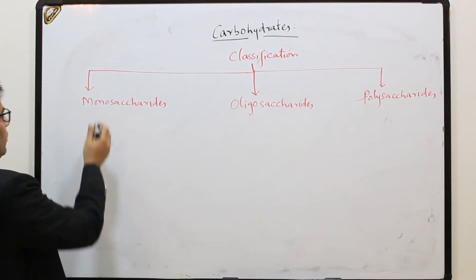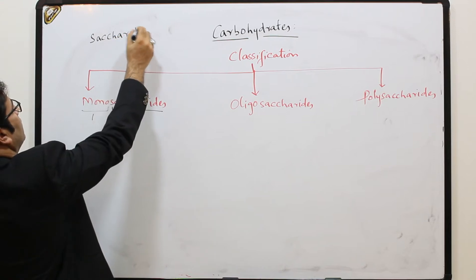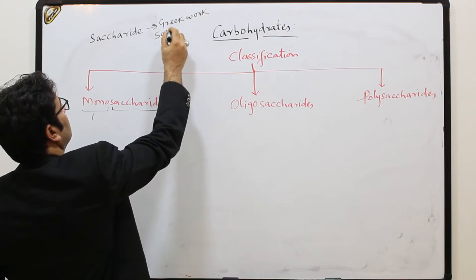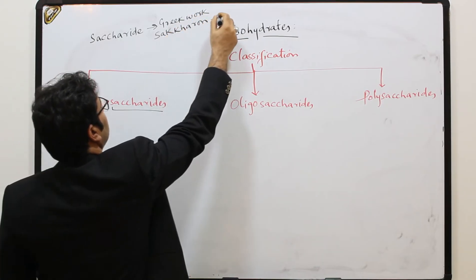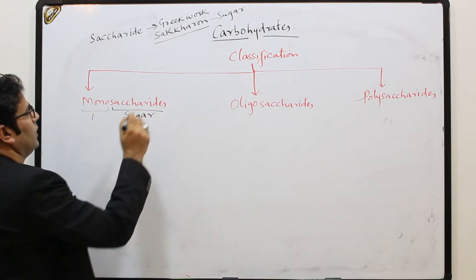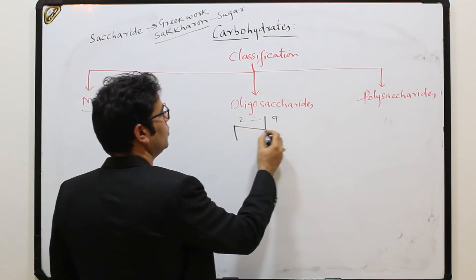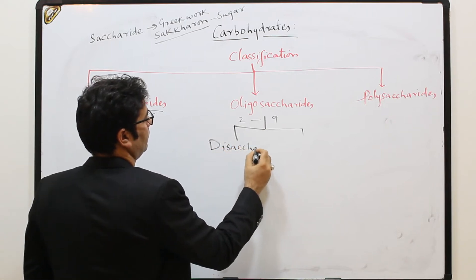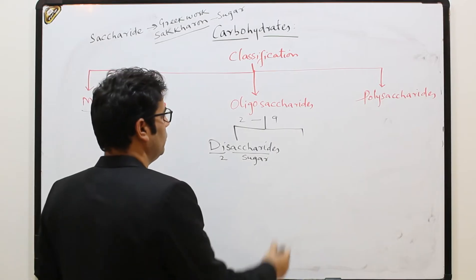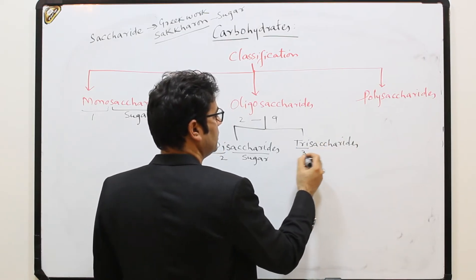Monosaccharides — when I say 'mono' it means one, and 'saccharide' is derived from a Greek word which means sugar. So when we have one sugar molecule in the carbohydrate, we call it a monosaccharide. Oligosaccharides generally have two to nine sugar units, and within that class we have two types: disaccharide (two sugar molecules) and trisaccharide (three sugar molecules).